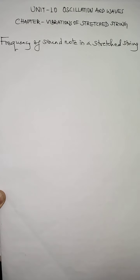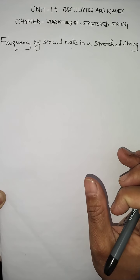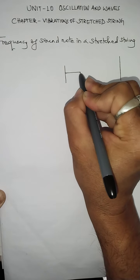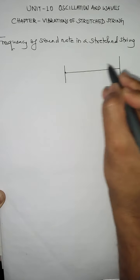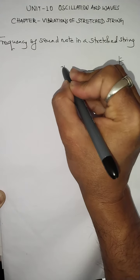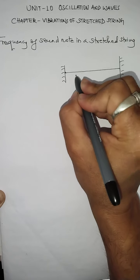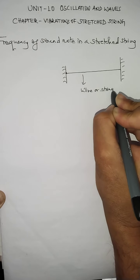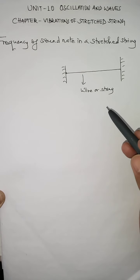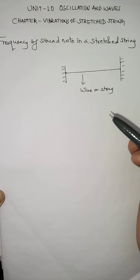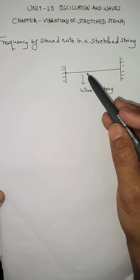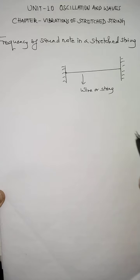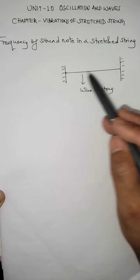We start this chapter with the frequency of sound note in a stressed string. For that we take a wire or string which is clamped to a rigid support at both ends. We take a wire of certain length, clamped to rigid supports on both sides. We can make this string vibrate with different frequencies, but to do so we need to pluck the string at different points along its length.